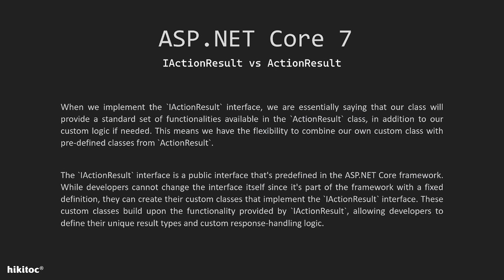This ensures the code will work correctly. When we implement the IActionResult interface, we are essentially saying that our class will provide a standard set of functionalities available in the ActionResult class, in addition to our custom logic if needed. This means we have the flexibility to combine our own custom class with predefined classes from ActionResult. The IActionResult interface is predefined in the ASP.NET Core framework. While developers cannot change the interface itself, they can create custom classes that implement IActionResult, allowing them to define unique result types and custom response handling logic.